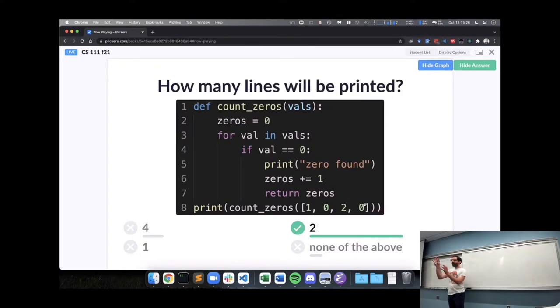Yeah, the plus equals one, we're going to keep adding up, totaling up the number of zeros. Every time we find a zero, we add one to a sort of count of how many zeros we've seen. Other questions?